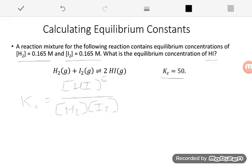Step two, we plug in all the pieces that we know. Kc is given right here as 50. It's asking for HI, so we don't have that. We'll put that as the unknown in the numerator.